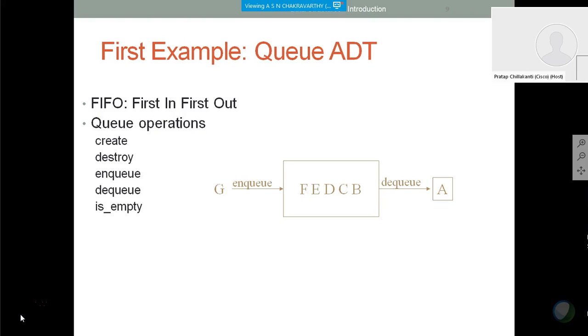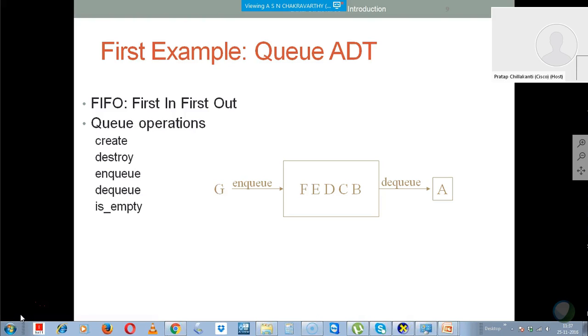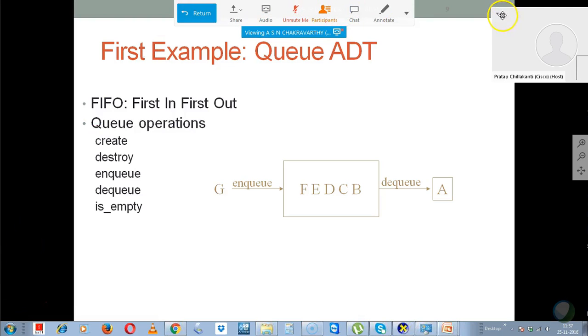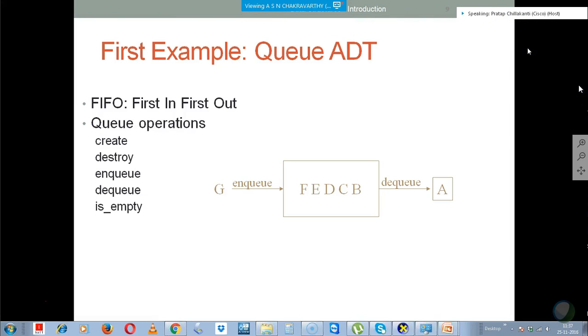So, just for fun, we are introducing some abstract data types here. Again, we will go through these kinds of things in greater detail throughout the course. This is just to get your feet wet. We all understand the concept of a queue. What is a queue? First in, first out. So, as you can see here, you have the queue there. F, E, D, C, B are in the queue. Enqueue means, you are adding an element into the queue. Dequeue means, you are taking the element out of the queue. So, you started building the queue with A, B, C, D, E, F. And then, you took the first element out. A was the first element, so you took it out. Different operations for that. You create a queue.